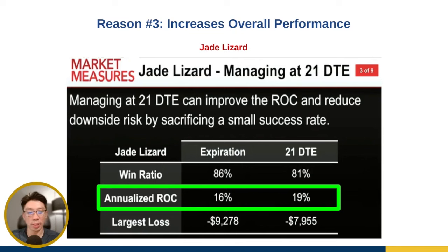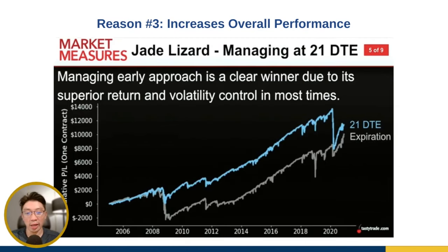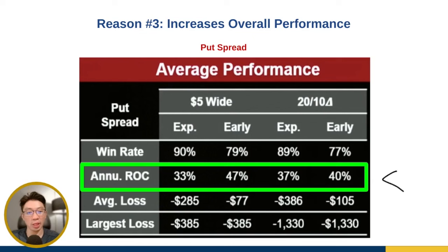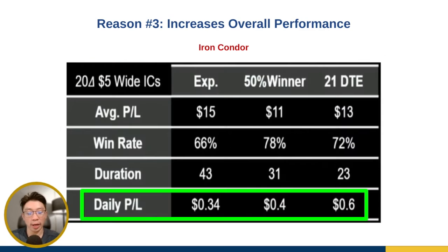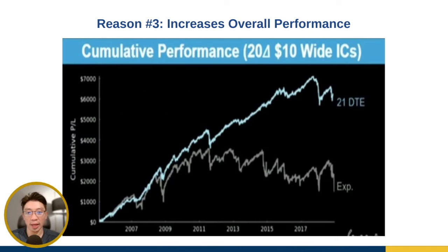Same for the Jade Lizard — if you exit at 21 DTE you get a higher return compared to holding to expiration, and the long-term performance shows the same. The TastyTrade team concludes: managing early is a clear winner due to its superior return and volatility control in most cases. For the put spread, managing earlier also gives you a higher return versus holding to expiration, with 21 DTE outperforming in long-term results. And for the iron condor, the average P&L per day is still higher when exiting at 21 DTE, and long-term performance is also higher.